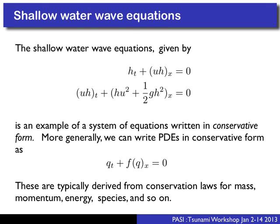The shallow water wave equations, which most of you are familiar with, in 1D form a coupled system of two equations. The first equation is for height — a depth-averaged height field — and the second equation is for momentum. This is the nonlinear version, and it's an example of a system of equations written in conservative form.